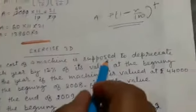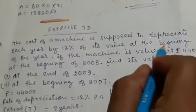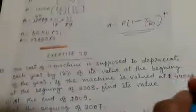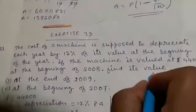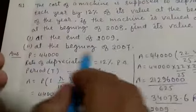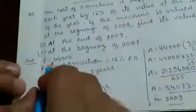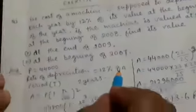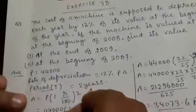The first question: the cost of a machine is supposed to depreciate each year by 12 percent of its value at the beginning of the year. If the machine is valued at 44,000 at the beginning of 2008, find its value — first part: at the end of 2009; second part: at the beginning of 2007. Here the principal is 44,000 rupees, rate of depreciation is 12 percent per annum.